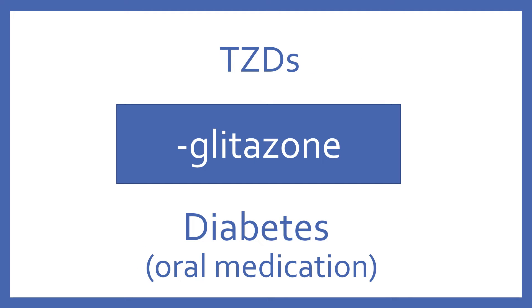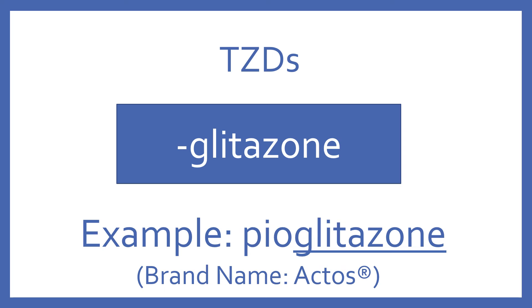TZDs end with the suffix -glitazone. TZDs are an oral medication for diabetes. An example of a TZD is pioglitazone, and its brand name is Actos.